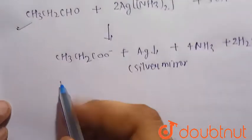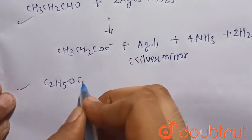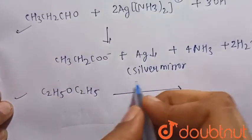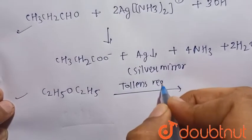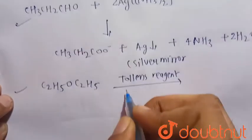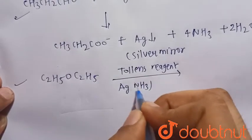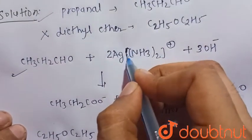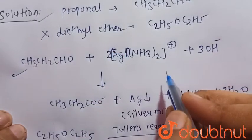So we can clearly see that propanol gives positive Tollen's test. But when diethyl ether, that is C2H5OC2H5, is reacted with Tollen's reagent, that is Ag(NH3)2 twice positive, in the presence of base...